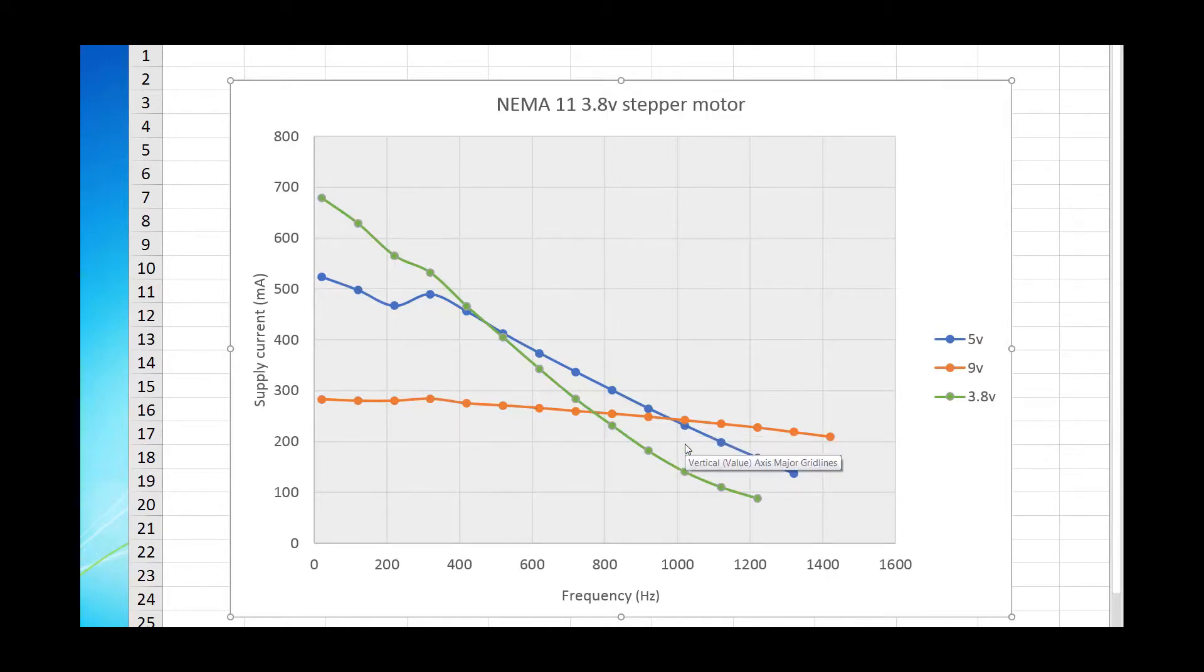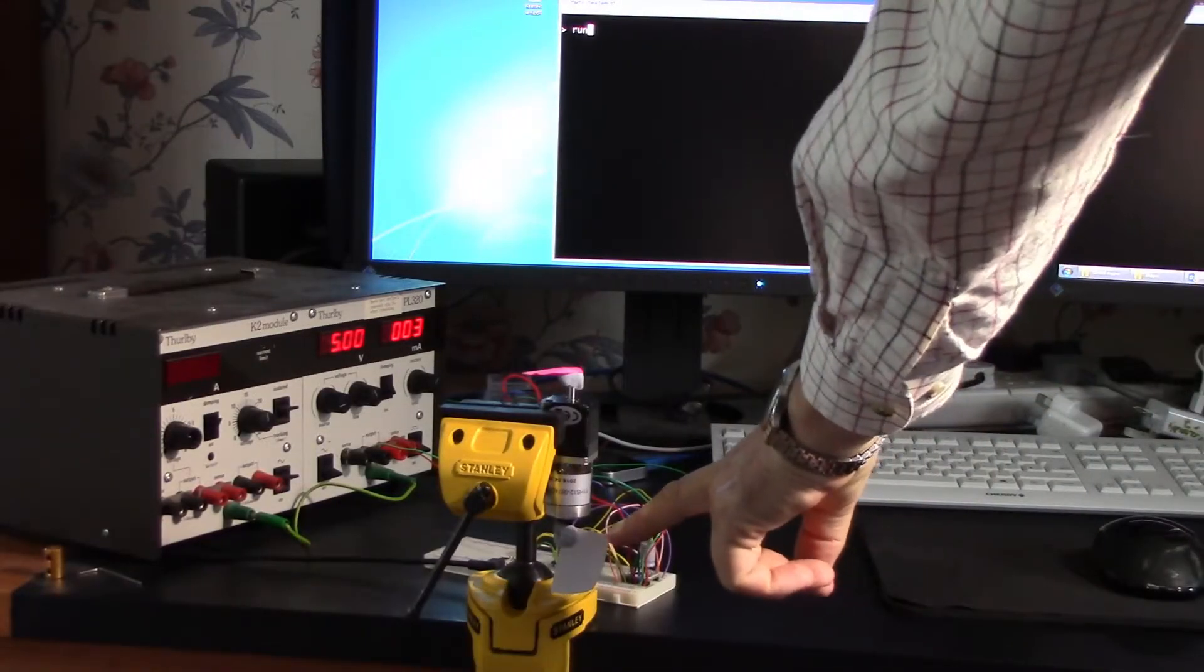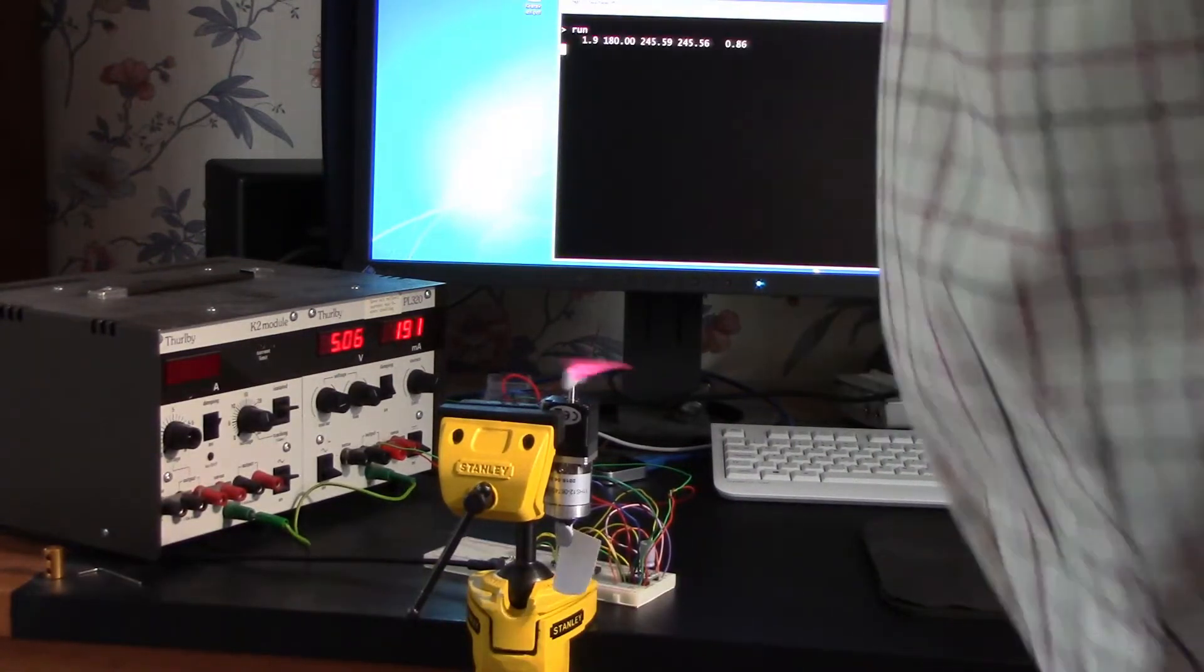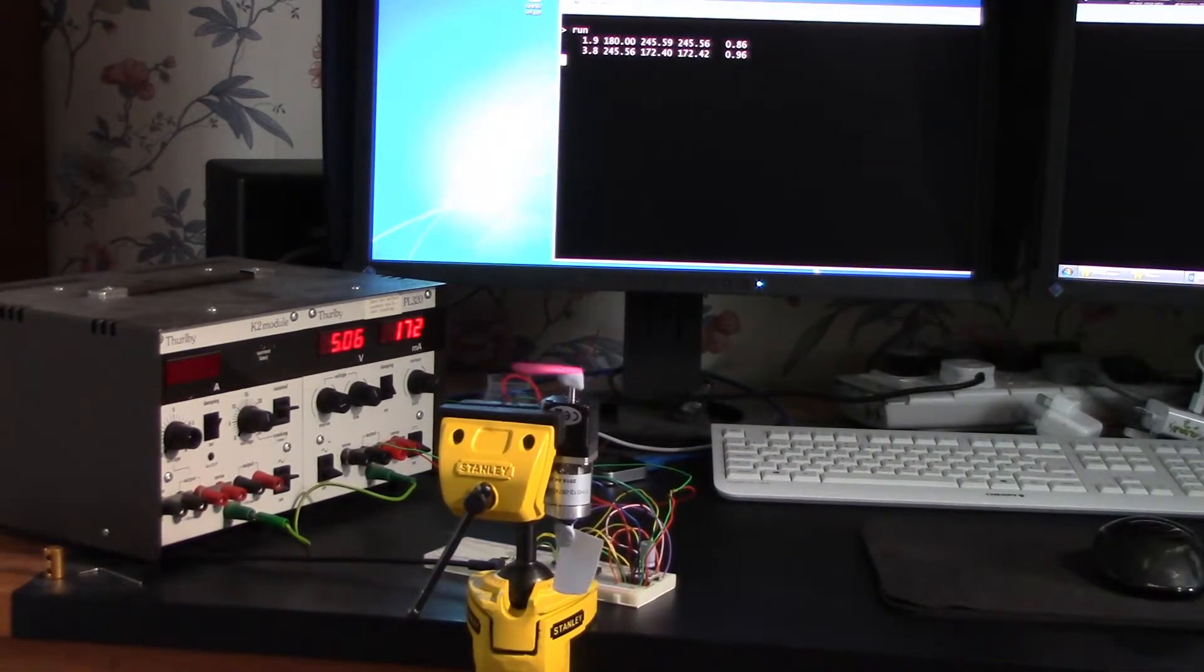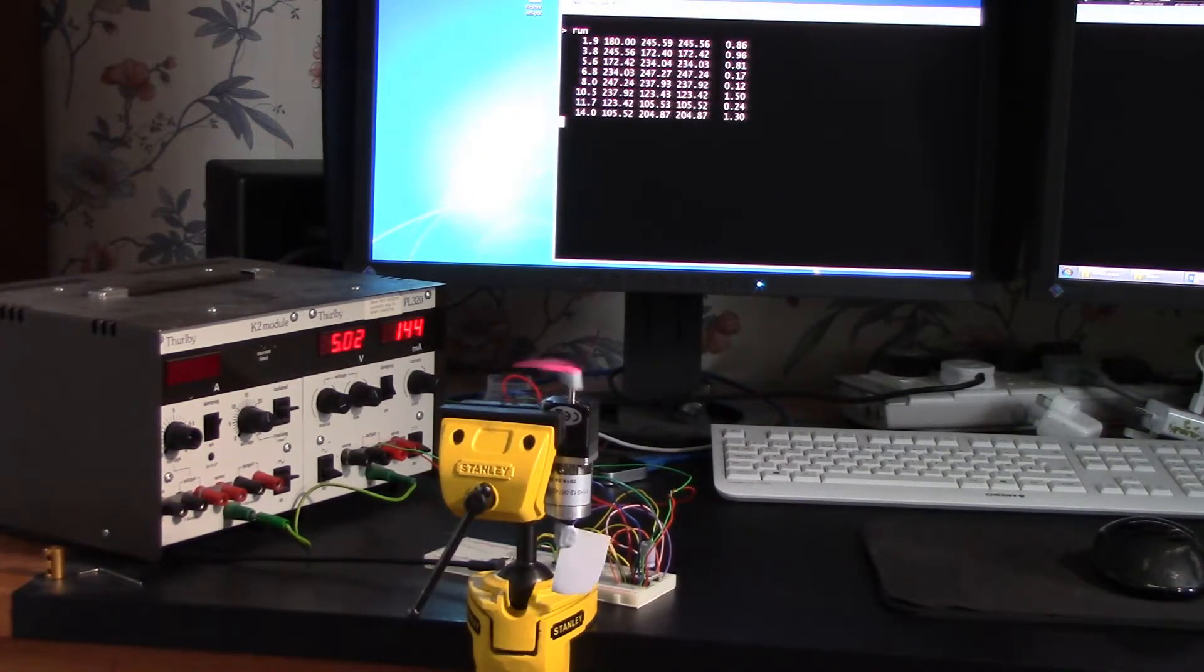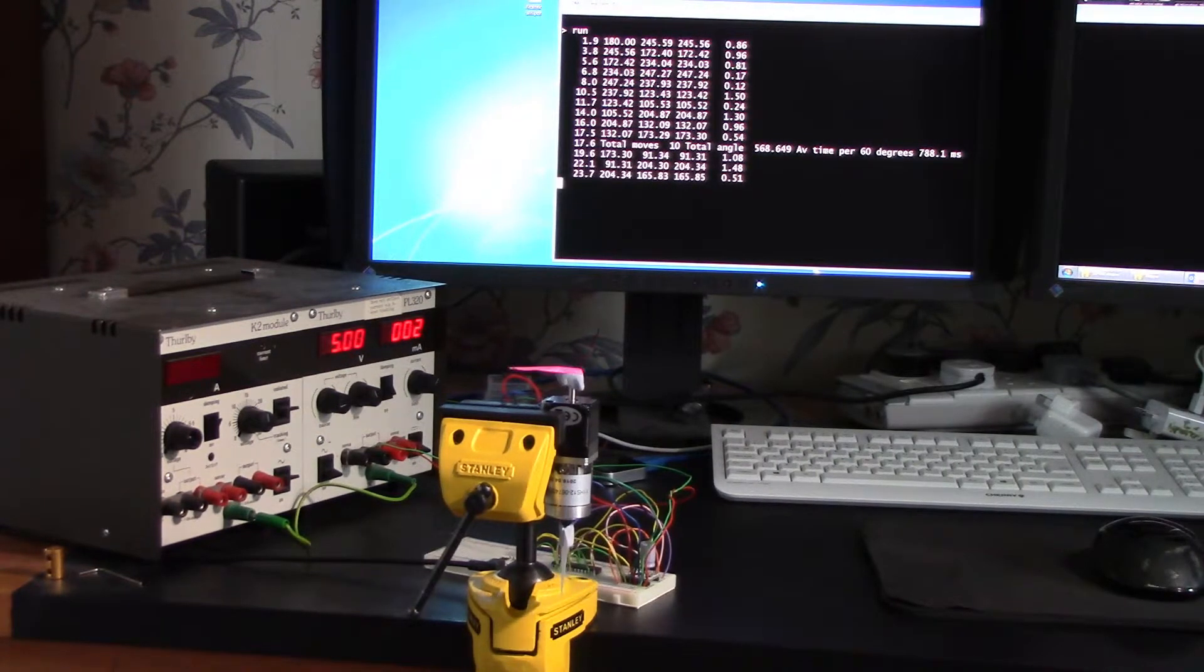So imagine this is the rudder at its central position. I just run the test program. This is running at 1136 steps a second and making random rudder movements and reporting on the screen.